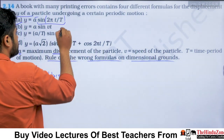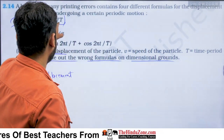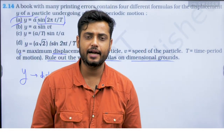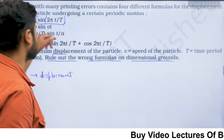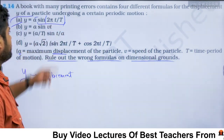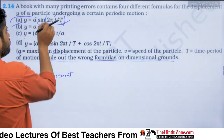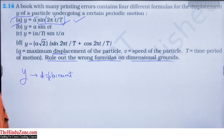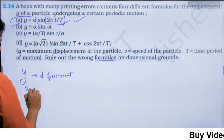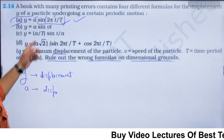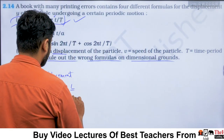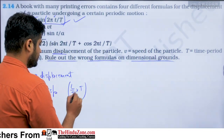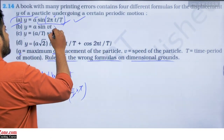For the second formula, sin and cos are defined for dimensionless numbers. Here sin(vt): v is L/T and t is time, so vt has the dimension of length — this is not dimensionless, so this formula is incorrect. For the third formula, y = (a/t) sin(t/a): a/t is length upon time which is speed, but y is displacement — dimensionally incorrect.